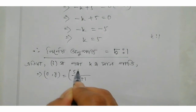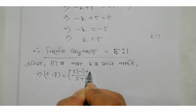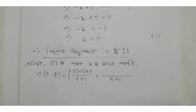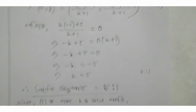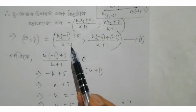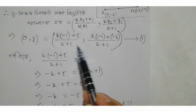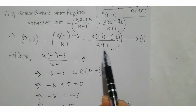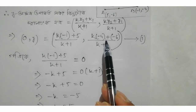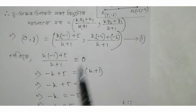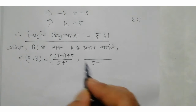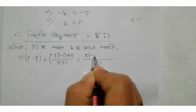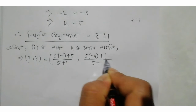k into minus 1 is 5 into minus 1 plus 5 is 5. Then we will get k plus 1 is 5 plus 1. K plus 1 is k into minus 1 plus 5 is 5 into minus 1. K into minus 4 plus minus 6 is 6. So we will get k into minus 4 is 6.